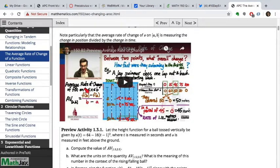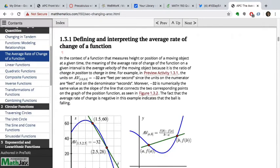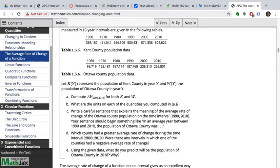Let's get started with activity 1.3.2, which gives you population data from Kent County and Ottawa County in Michigan. You're asked questions about average rate of change from these data tables. We don't have a formula to describe the population over time, just data points, but that needs to be enough.